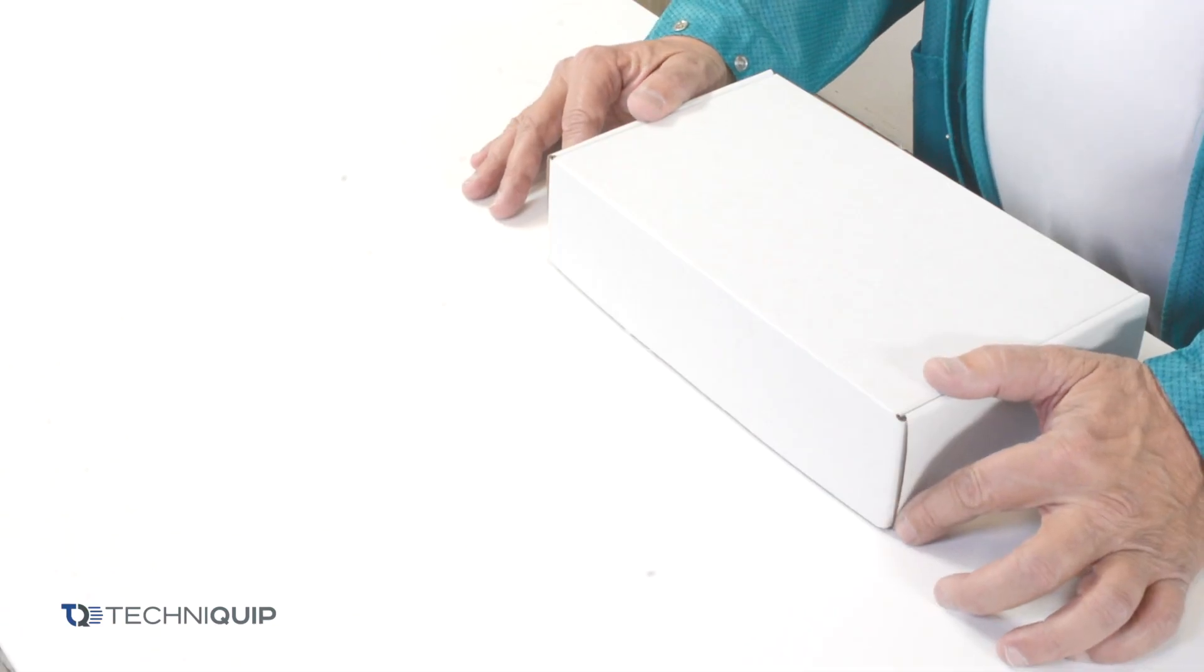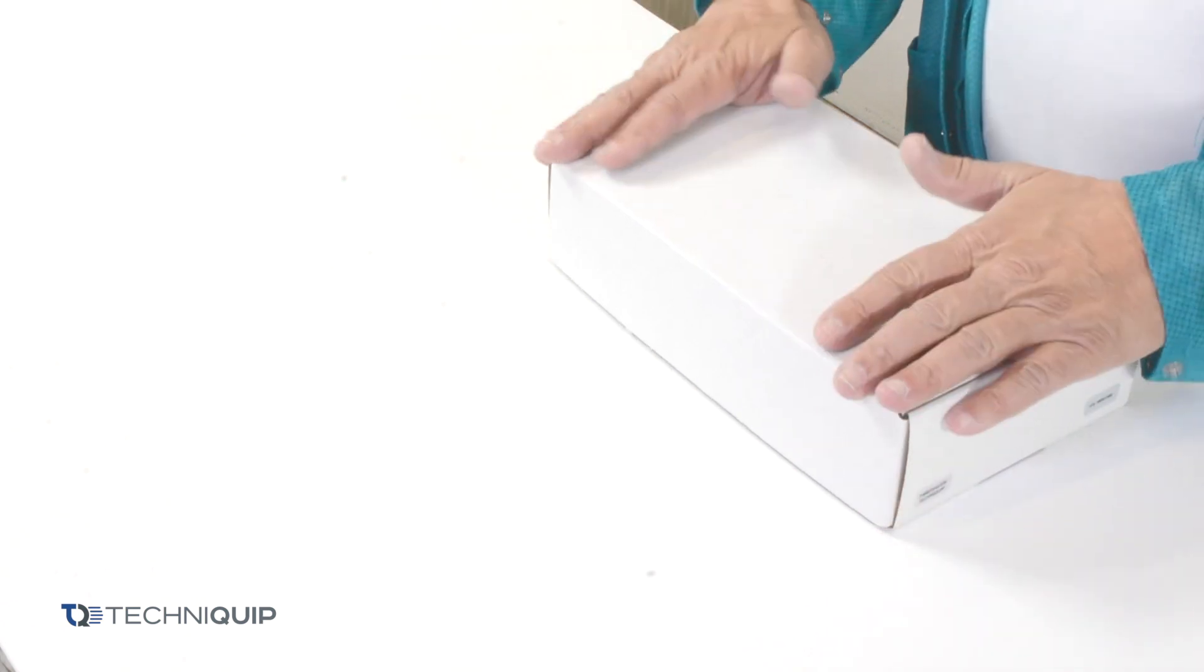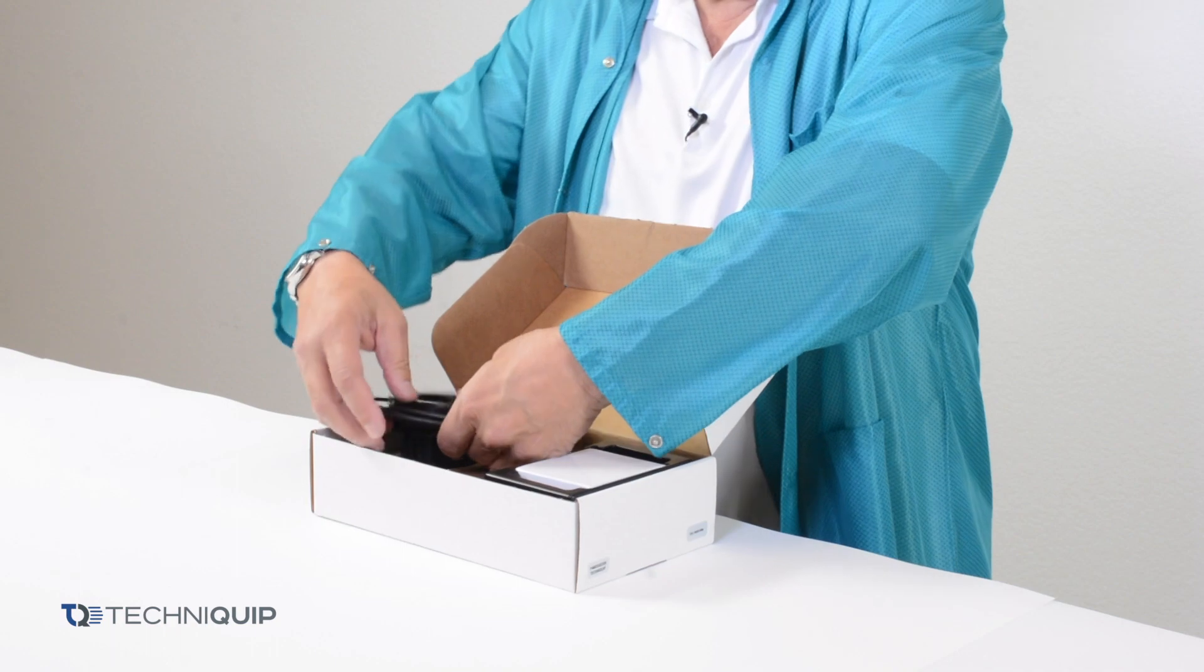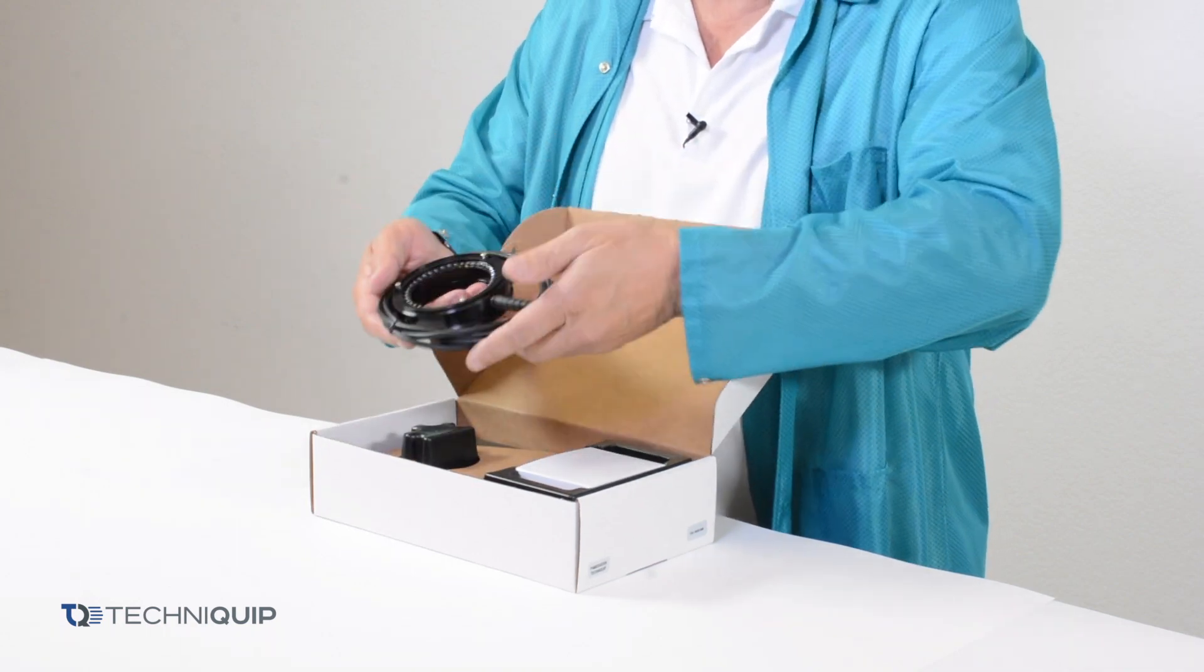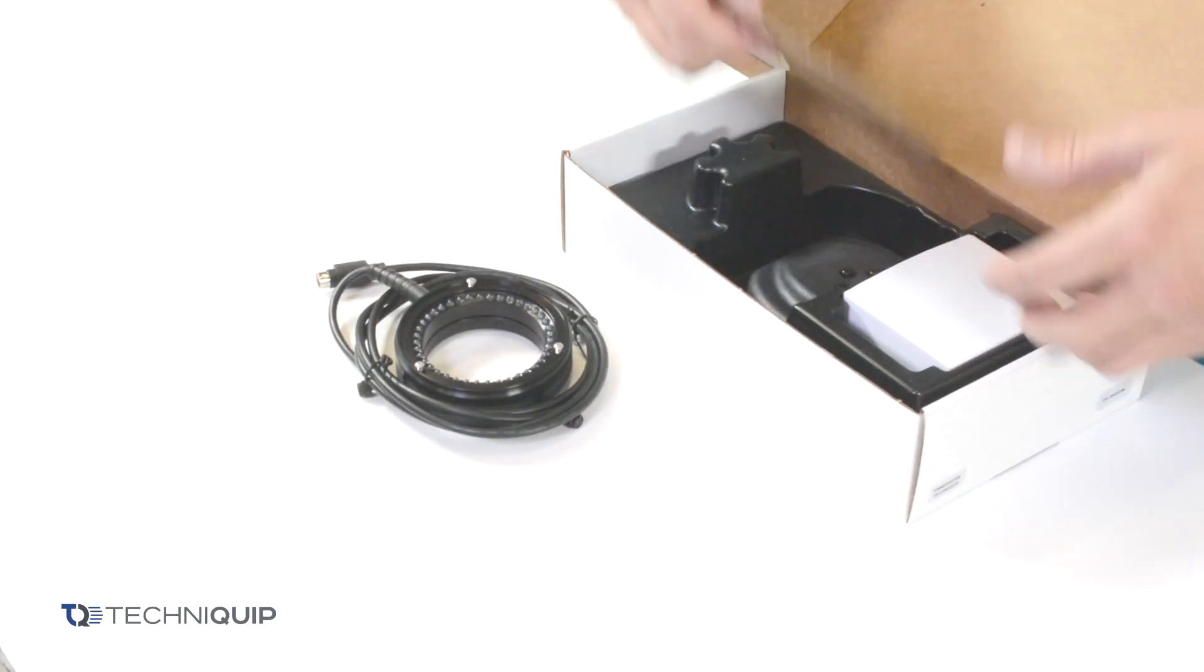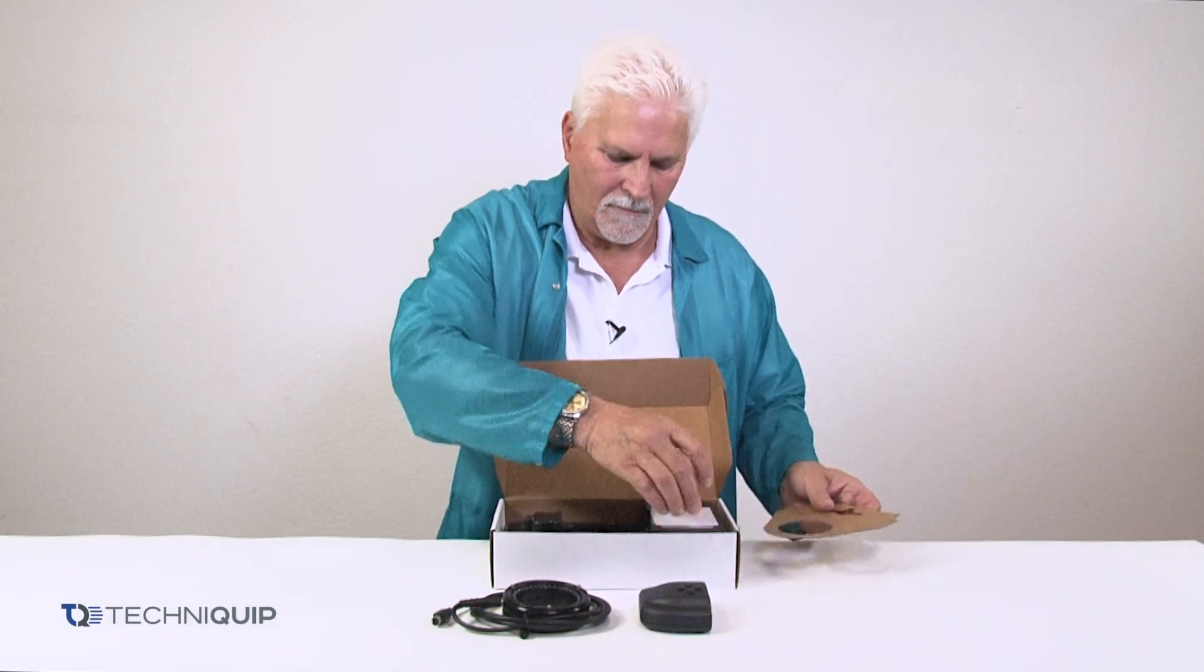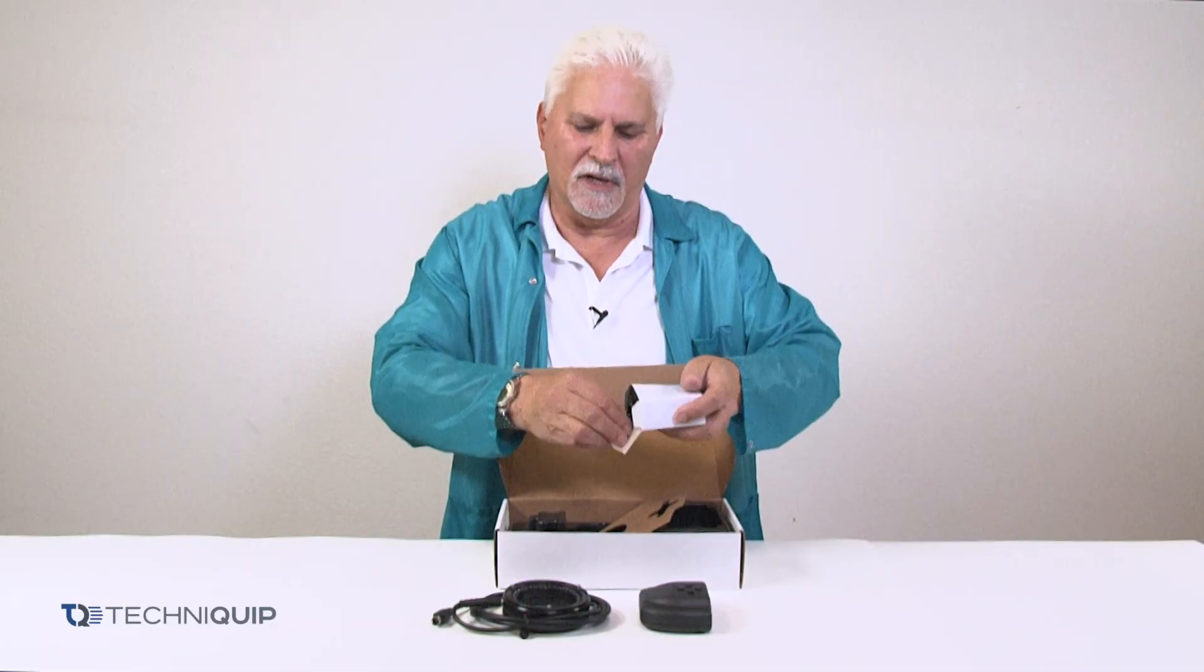When you receive one of the ProLine kits it'll come in a box like this. Within the box you'll find the LED model that you chose, a controller module, and the AC power connector.